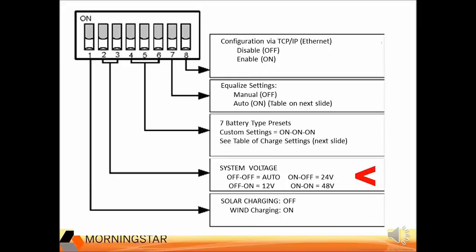DIP switches 2 and 3 can be set for voltage auto-detect, or you can set it to the voltage of your system to be absolutely sure it charges to the correct voltage of 12, 24, or 48 volts. It is good to think of these as multipliers of the 12-volt nominal settings. The battery settings table is in 12-volt nominal but it gets multiplied by 2 to get 24 volts or 4 to get 48 volts. The custom settings are also programmed with 12-volt nominal voltages, which is really important when doing custom settings.